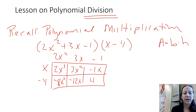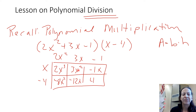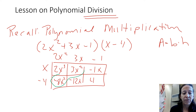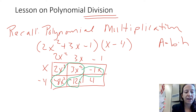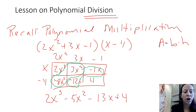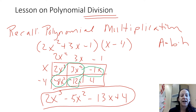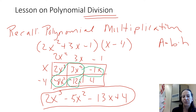So 2x squared times x is 2x cubed, then we have 3x squared and negative 1x. Then 2x squared times negative 4 is negative 8x squared, 3x times negative 4 is negative 12x, and negative 4 times negative 1 is positive 4. What's important to notice is that you have like terms on those diagonals — negative 8x squared and 3x squared combine to get negative 5x squared. The product would be 2x cubed minus 5x squared minus 13x plus 4. Remember, the box models the multiplication but the actual answer is written as a polynomial expression.